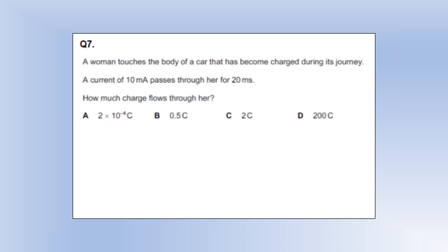A woman touches the body of a car that's become charged during its journey. A current of 10 milliamps passes through her for 20 milliseconds. How much charge flows through? Using Q equals IT, converting into amps and converting into seconds gives us our charge.